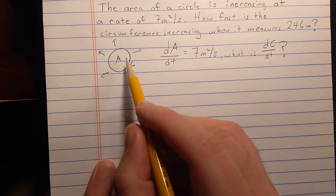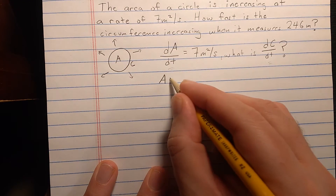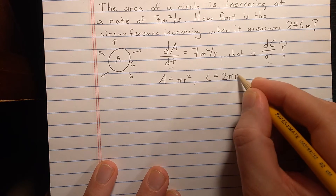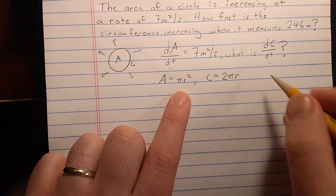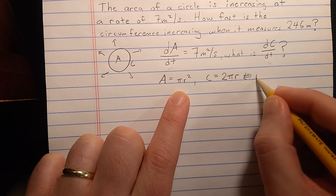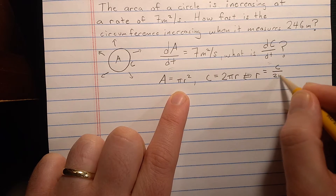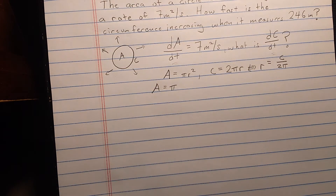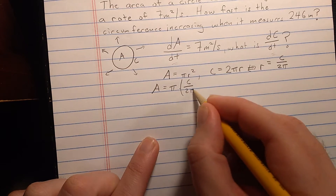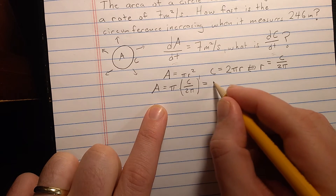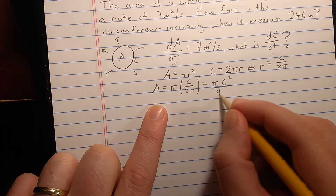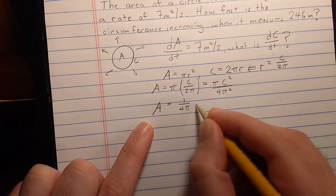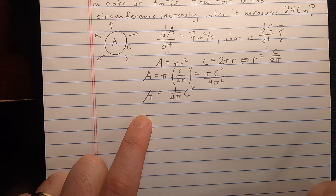I want the relationship between A and C. A is πr², and the circumference is 2πr. That doesn't directly relate the area and the circumference, but if I solve the second equation for r, I get r equals C over 2π, and I can substitute that back into the first equation for area. Then I get that the area equals π times C² over 4π², or that the area equals 1 over 4π times C squared. This is exactly the relationship between A and C that I'll use.